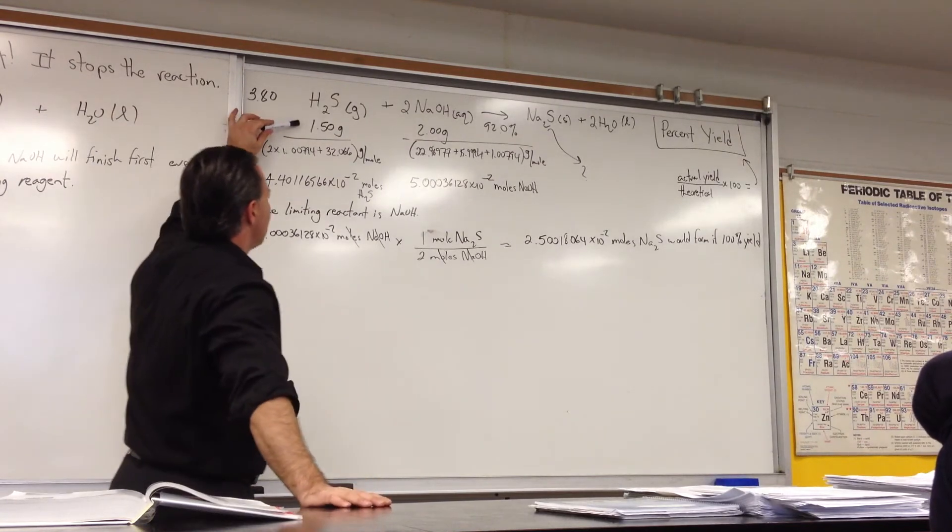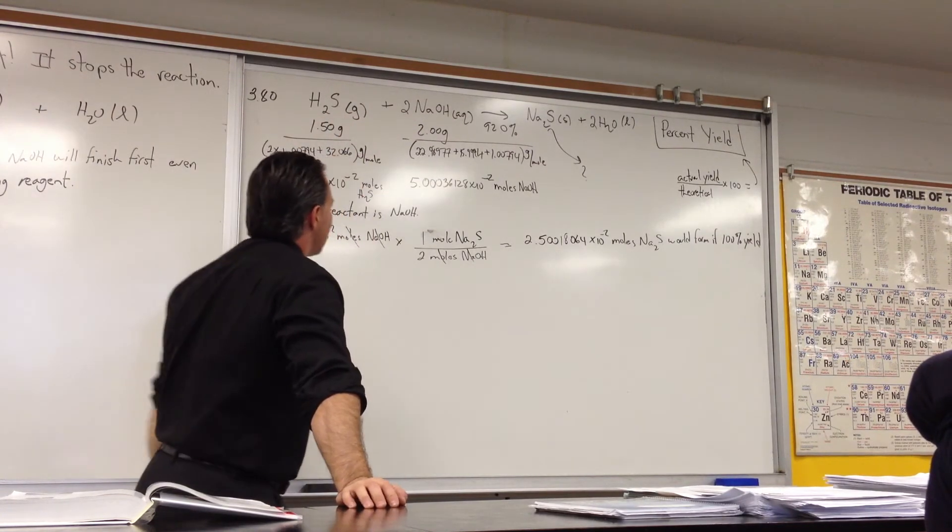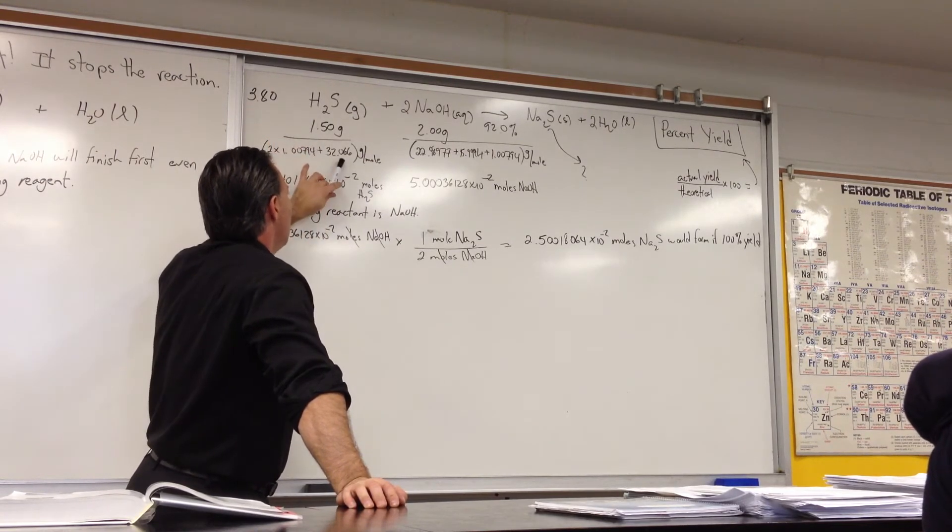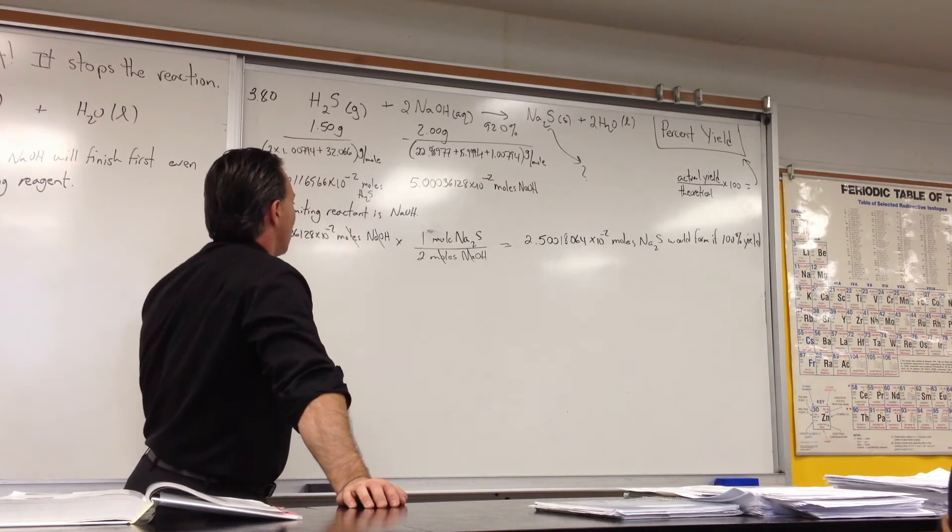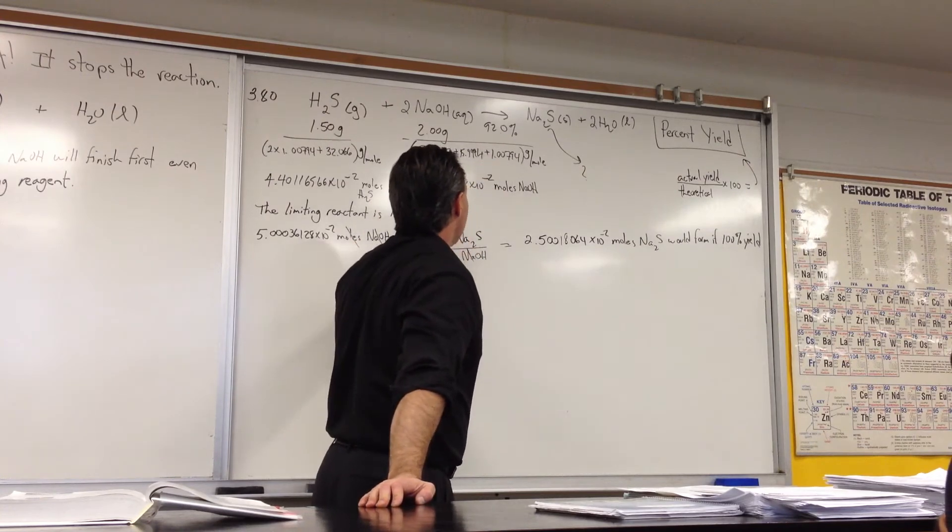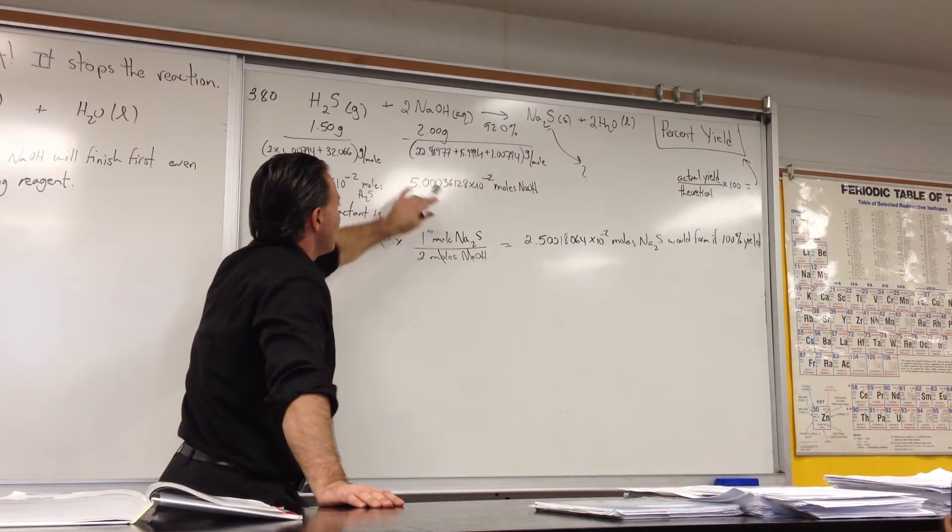So we start off with 1.5 grams of hydrogen sulfide and 2 grams of sodium hydroxide. We divide it by the molar mass of each. So the hydrogen sulfide is 2 times the molar mass of hydrogen, plus the molar mass of sulfur here. And it gives you that many moles of hydrogen sulfide. Sodium hydroxide, a total of 40 grams per mole. And you get that many moles of sodium hydroxide.